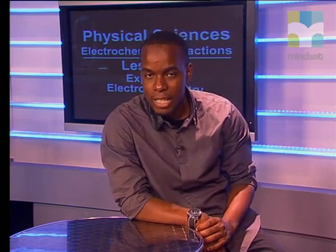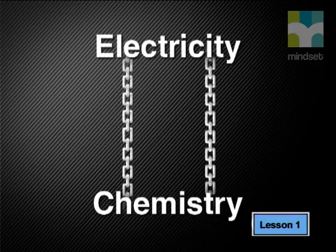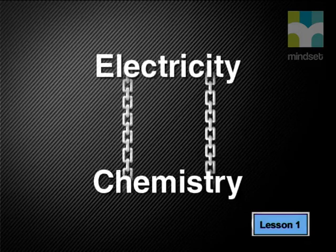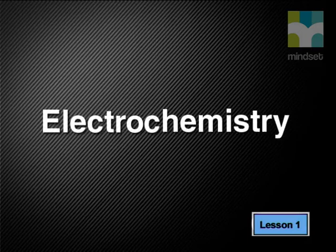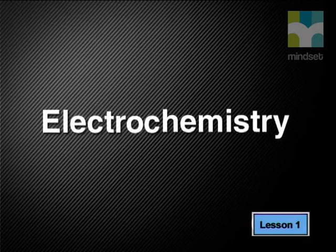We will explore the links between electricity and chemistry, and by doing this introduce you to electrochemistry. Electrochemistry involves two types of processes: in one process, chemical reactions produce electricity, but in the other, we use electricity to make chemical products.